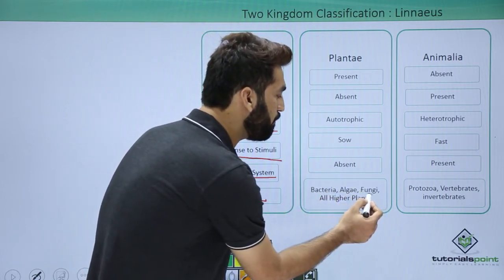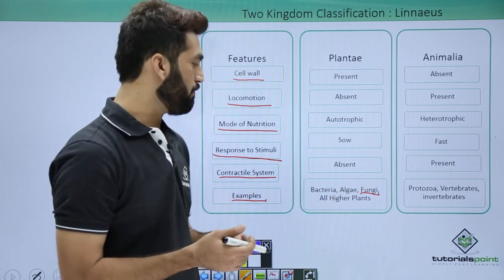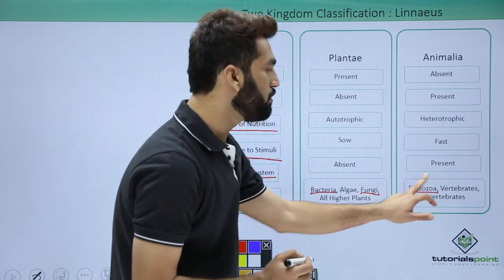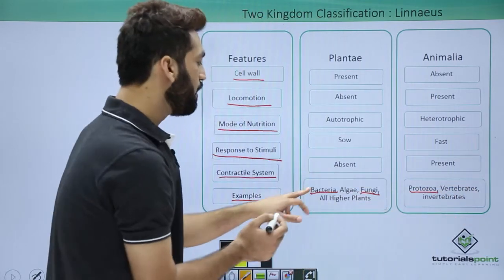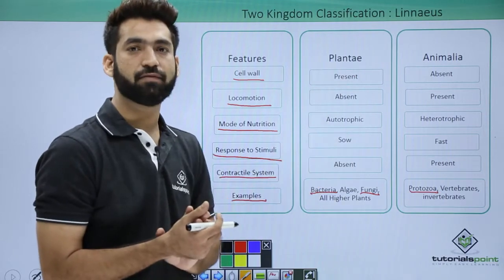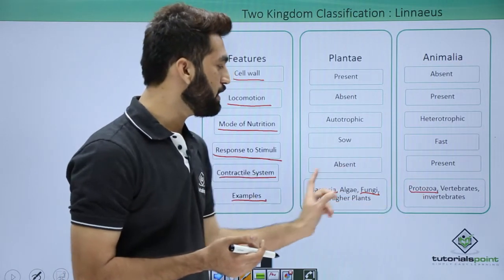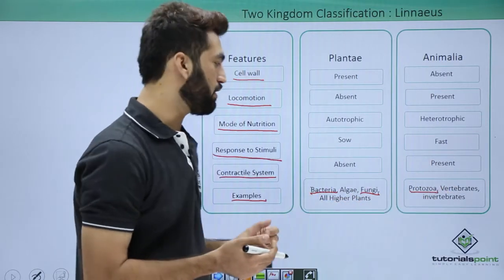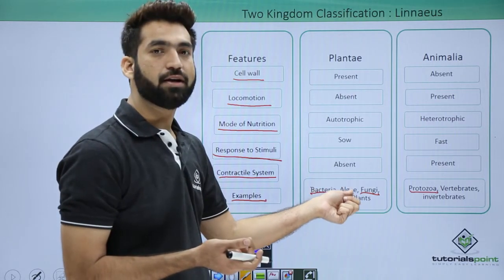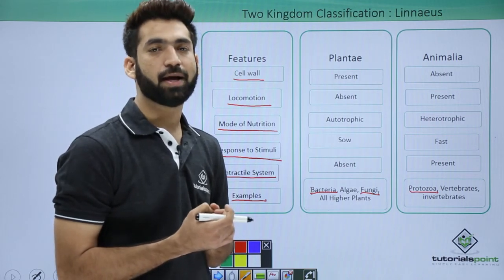A second limitation: fungus is heterotrophic while algae and higher plants are autotrophic, so autotrophic and heterotrophic organisms are clubbed together. A third limitation: protozoa is unicellular but is grouped with multicellular vertebrates and invertebrates, and bacteria is also unicellular but grouped with other multicellular organisms. These three limitations led to the development of the three kingdom classification system.